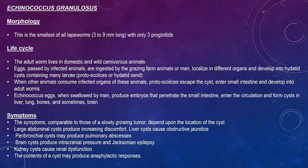The symptoms are comparable to those of a slowly growing tumour, which depends on the location of the cyst. Large abdominal cysts produce increasing discomfort; liver cysts cause obstructive jaundice; peribronchial cysts may produce pulmonary abscesses; brain cysts produce intracranial pressure and jacksonian epilepsy. Kidney cysts can cause renal infections, and the contents of a cyst can produce anaphylactic responses.